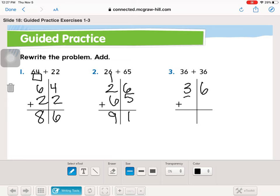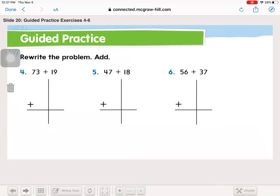And then 36 plus 36. Let's look in the ones. 6 plus 6 is 12. 12 has two ones. 1, 10. 3 plus 3 is 6. Plus one more is 7.